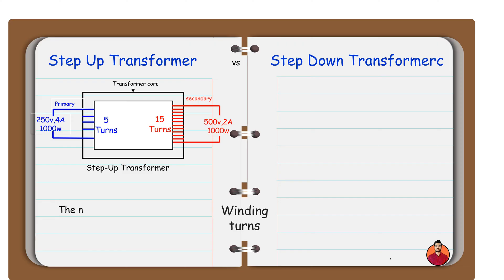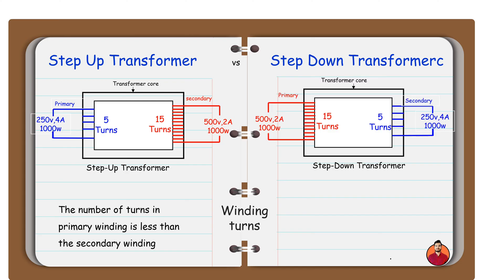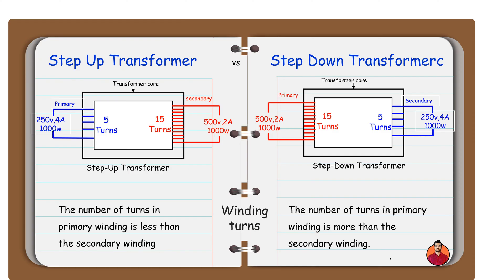In step up transformer the number of turns in primary winding is less than the secondary winding. In step down transformer the number of turns in primary winding is more than the secondary winding.